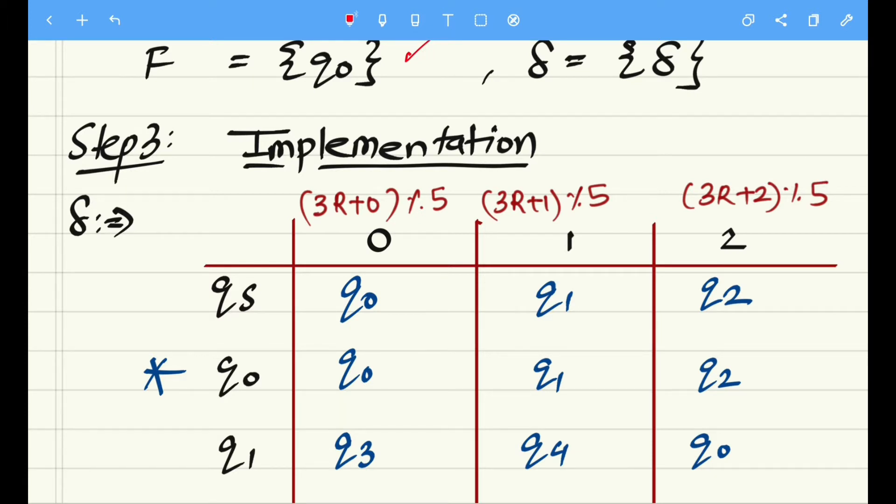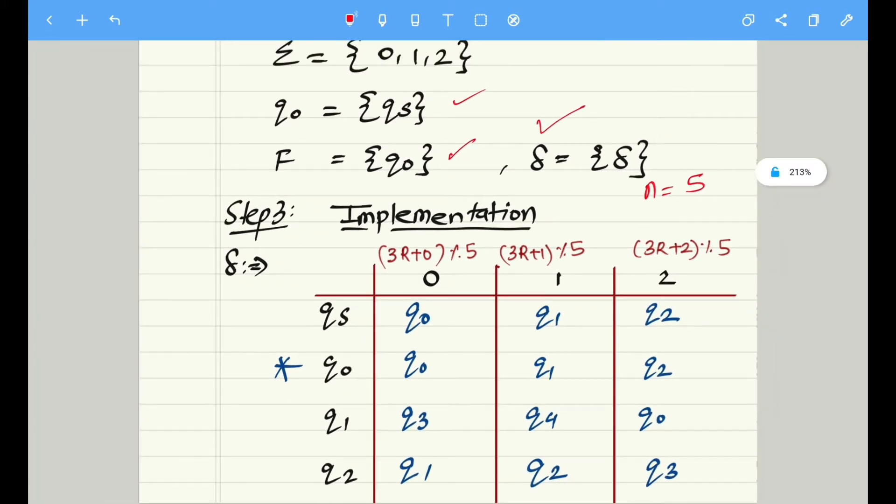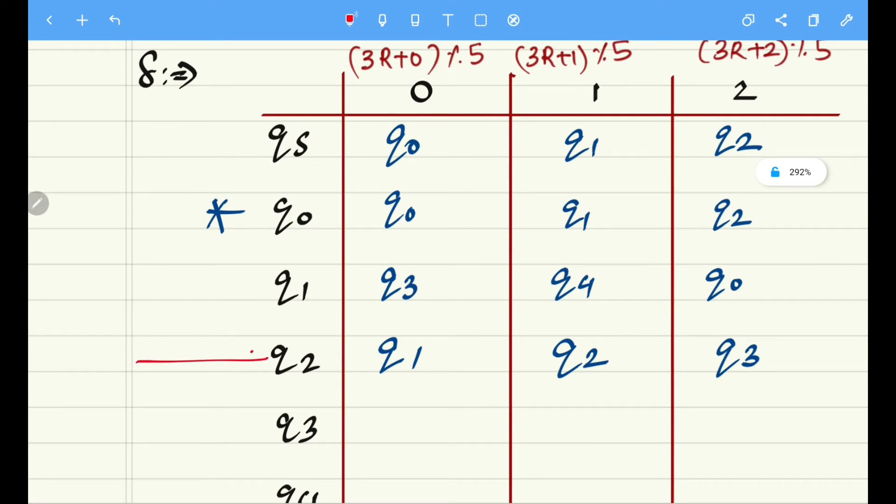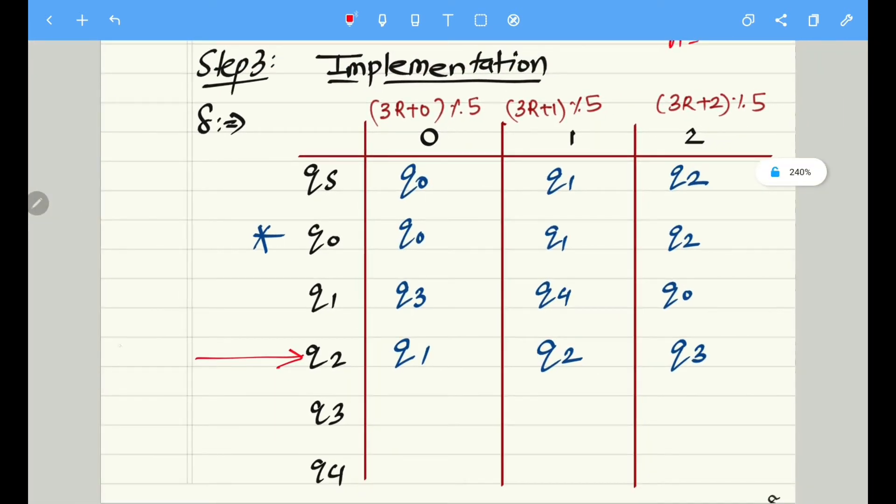It was 2R plus 0 mod N in the previous problem. Here we are having 3R plus 0 mod N, where 5 is N. And we are having three inputs, that is why we have taken 3R instead of 2R. Otherwise R remains same - R is nothing but the remainder value of that state. So right now, let me consider this state Q2 straight away.